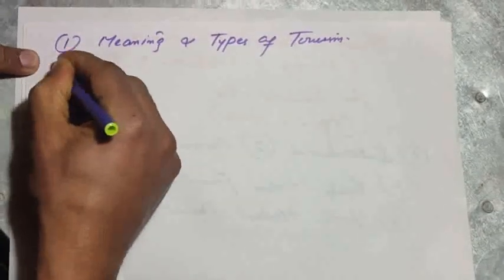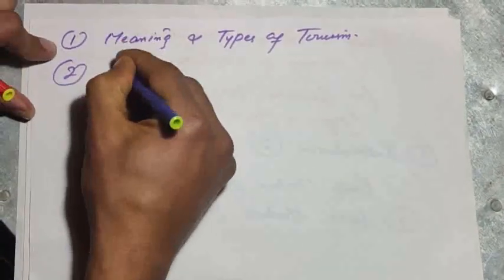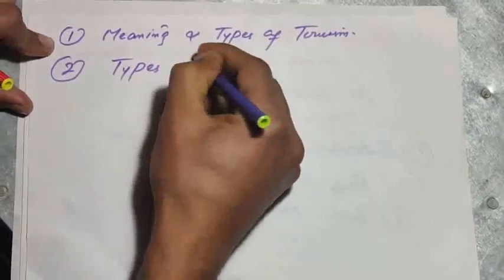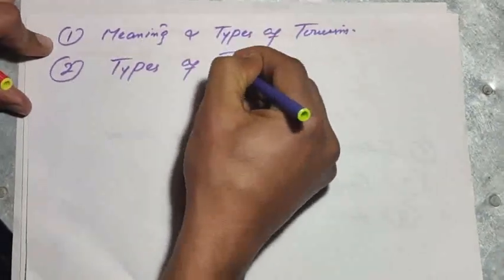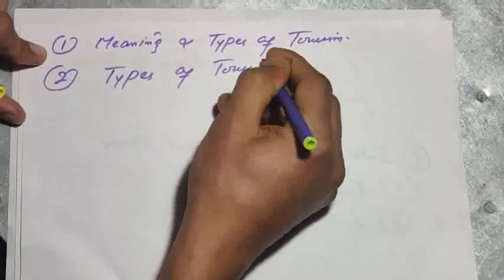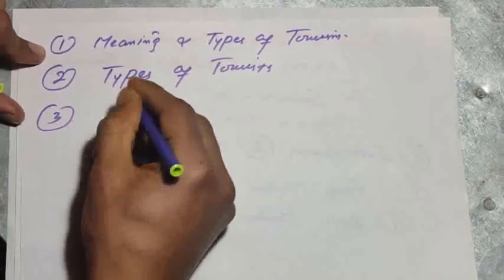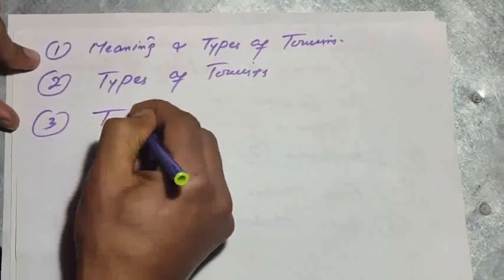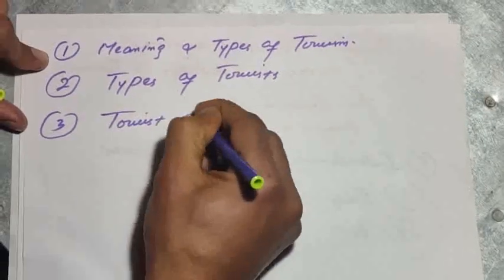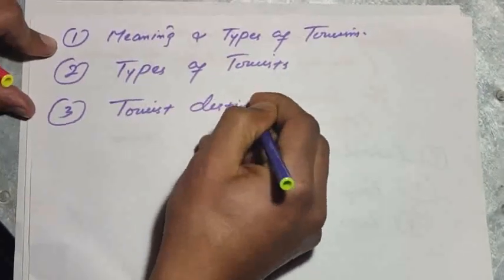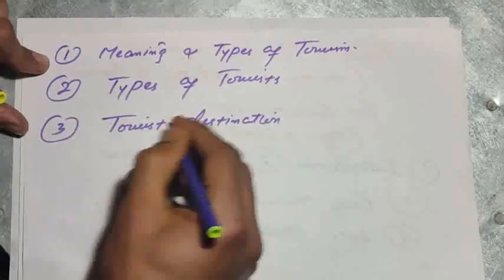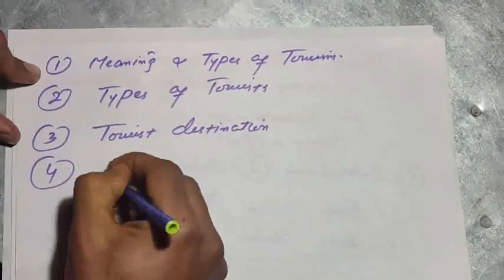Question number second, that is Types of Tourists. Question number third, that is Tourist Destination. Coming to question four, that is Tourism History.